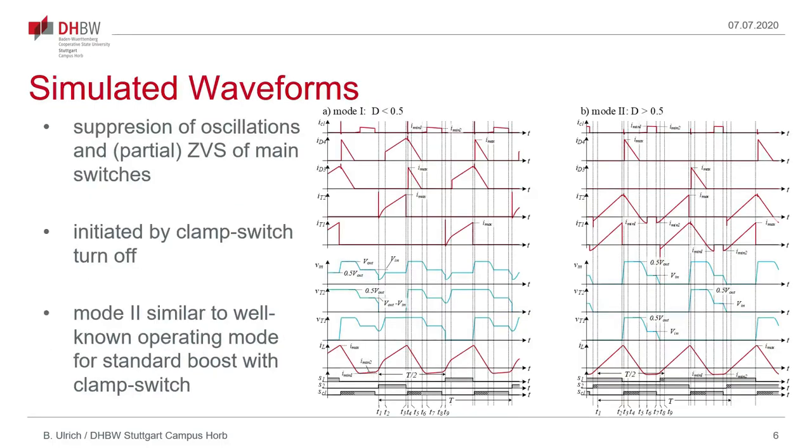In this slide simulation waveforms of the converter are shown. The upper five traces shown here in red for both operating modes are the currents of the transistors and the two diodes as well as the current through the clamp switch network. The blue traces here are the voltages across both transistors and the combined midpoint voltage which is the sum of both. And the lower red trace is the inductor current. The lowest traces shown are the control signals of the switches. In both cases here in mode 1 and mode 2 we have negative current in the phase where normally the current would oscillate.